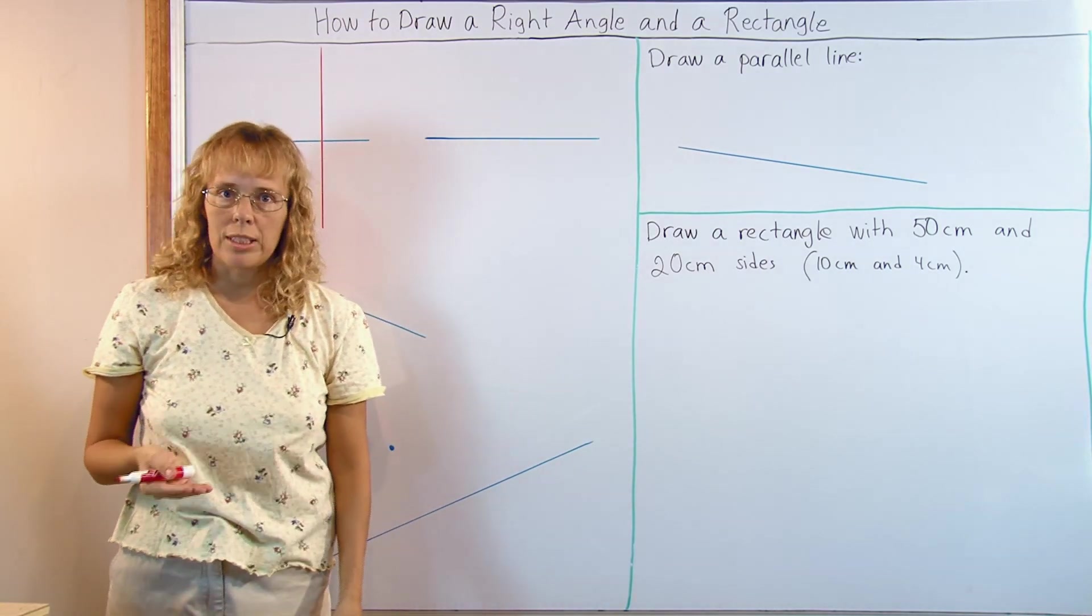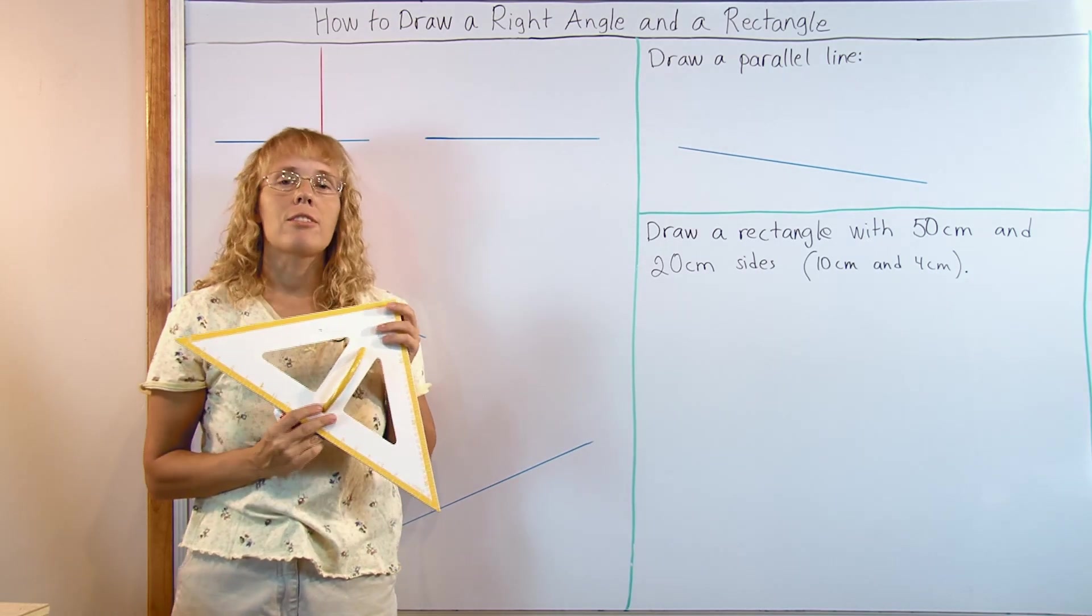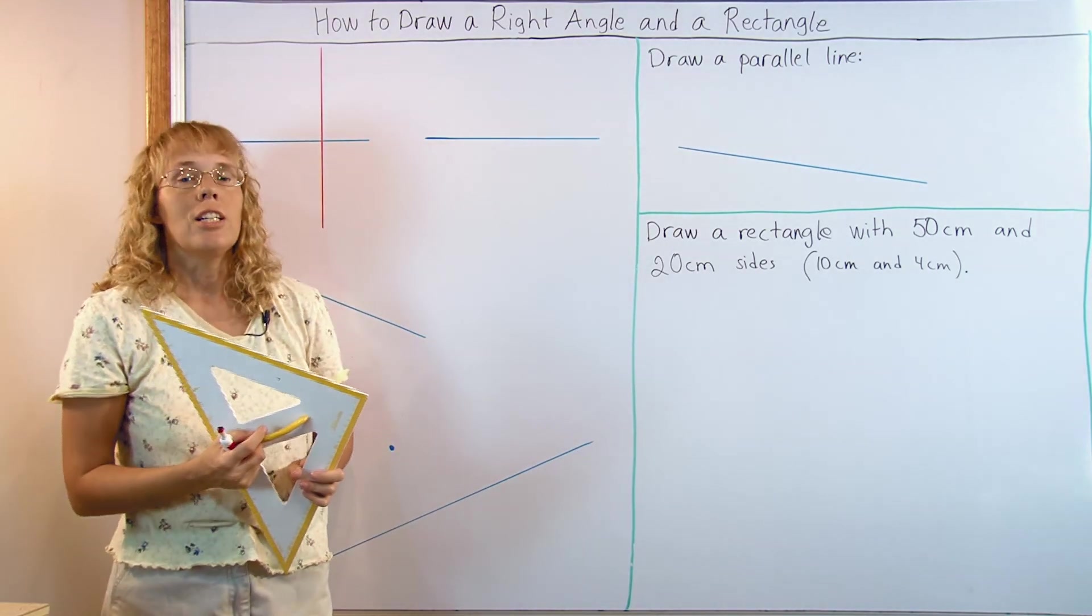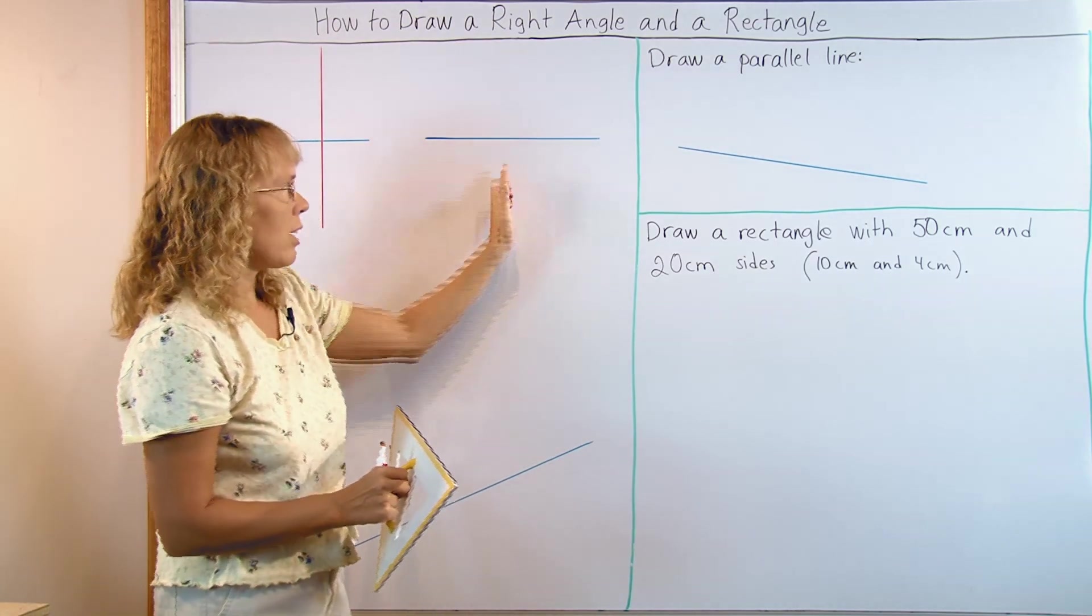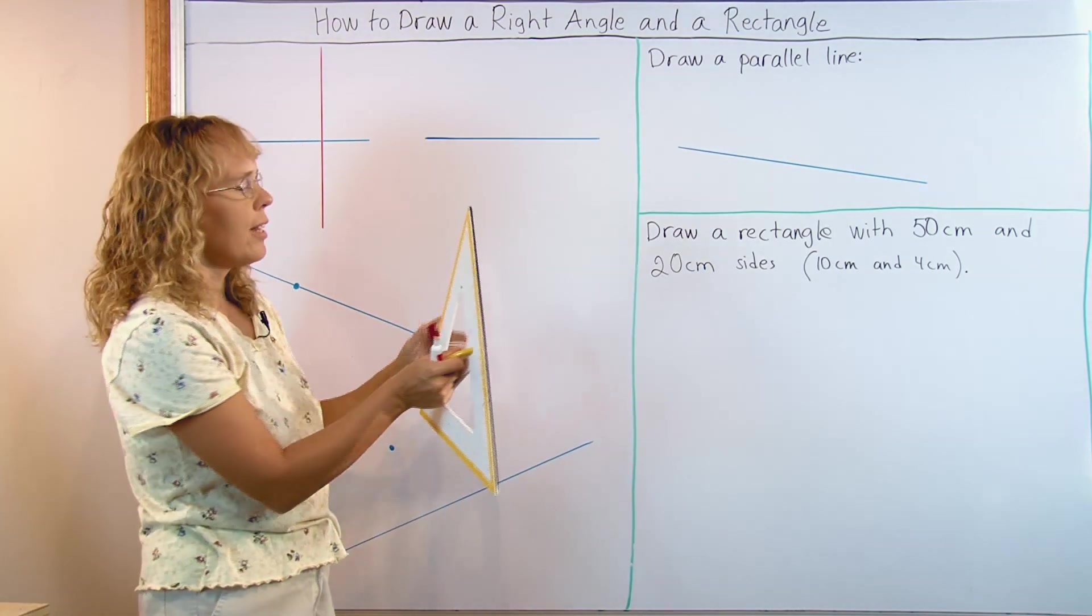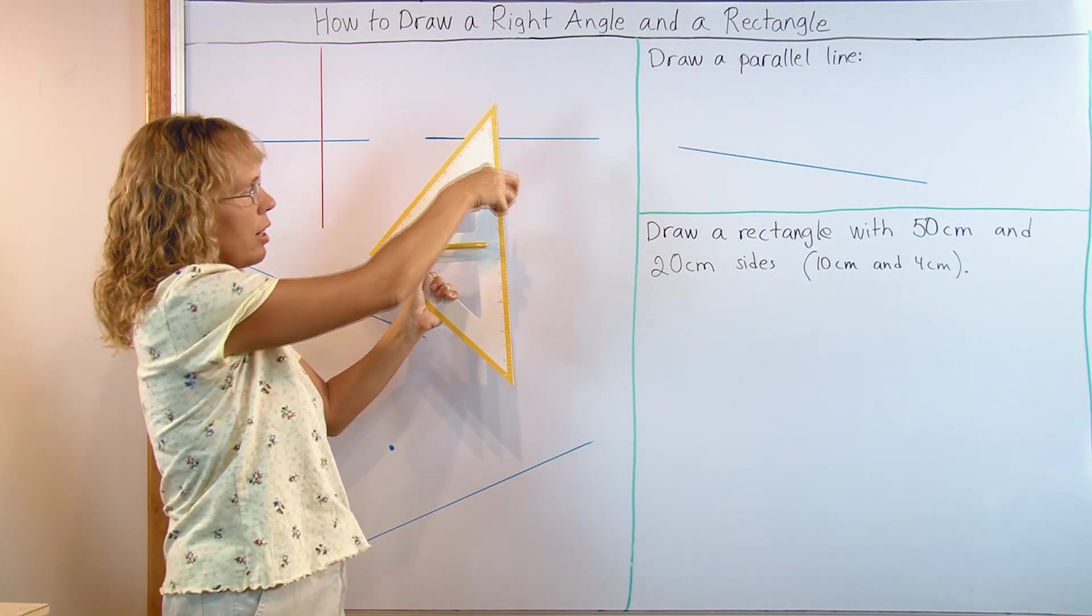I'm going to show you also how to do this same thing using a triangular ruler. This is a triangular ruler and we can also use this to draw a right angle, or actually to draw a line that goes at the right angle, called a perpendicular line. You need to use this side to actually draw your line.